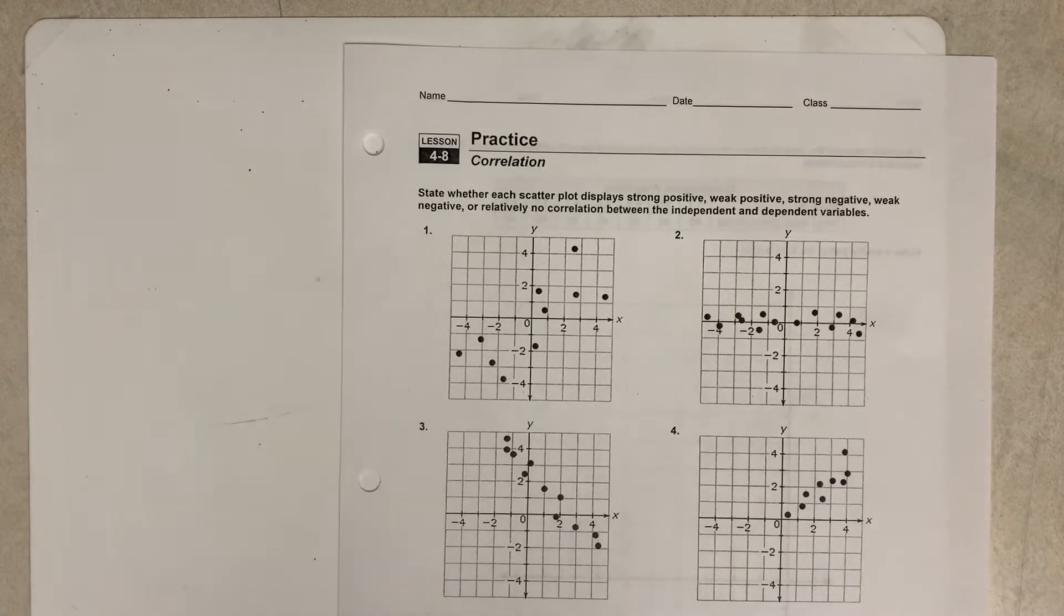Hey guys, this is Mr. C, and in this video we're going to look at correlation between what's called two pairs or pairs of bivariate data, which basically means ordered pairs.